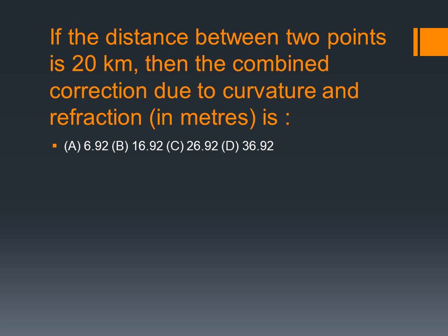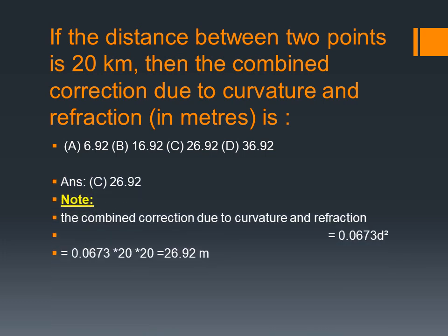Next question: if the distance between 2 points is 20 km, find the combined correction due to curvature and refraction. The formula for combined correction due to curvature and refraction is 1.0673 × D², where D is the distance in kilometers.